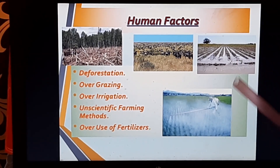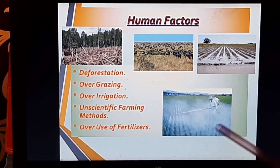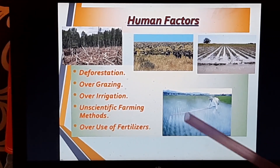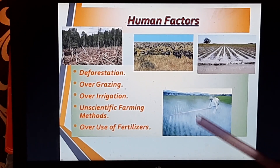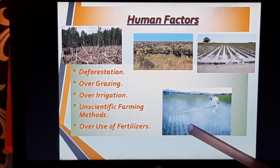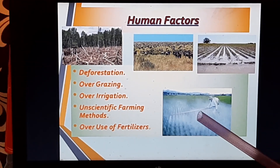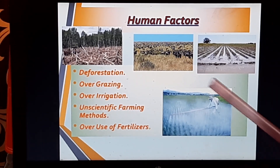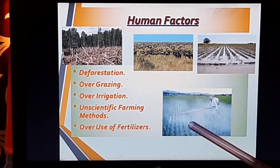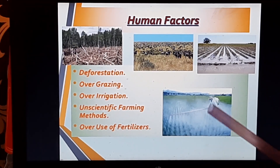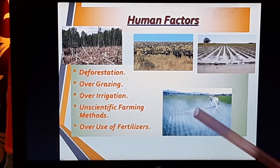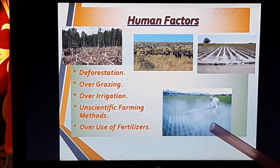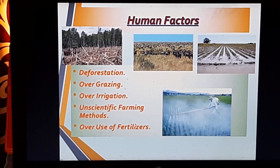When we spray fertilizers or pesticides, the natural nutrients of the soil are destroyed. With unscientific farming, if we continuously cultivate one type of crop, the soil cannot regain its nutrients. Instead, if we rotate crops — for example, growing pulses alternately with cereals — the soil will not degrade. So unscientific farming method is also a human factor responsible for soil erosion.